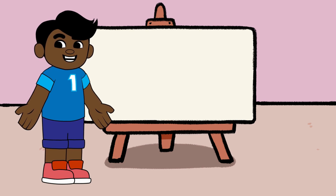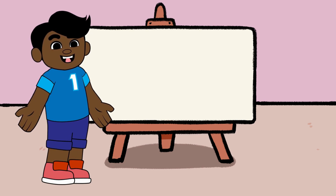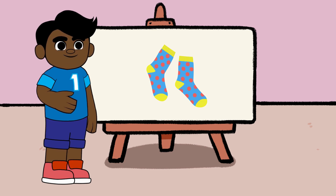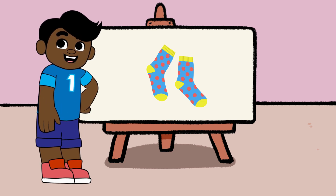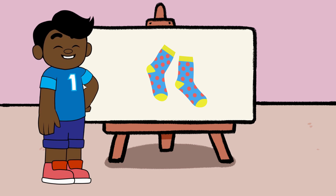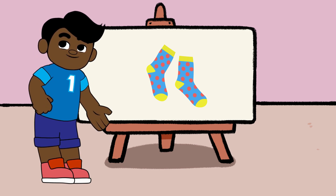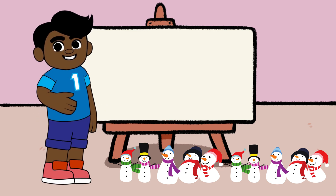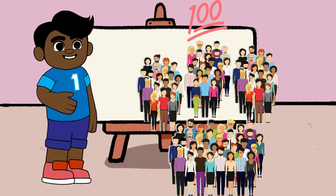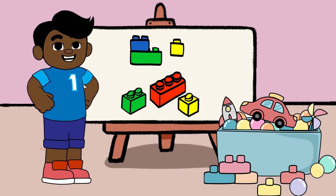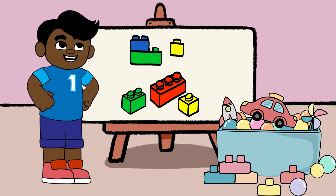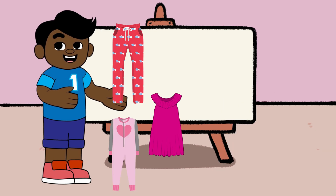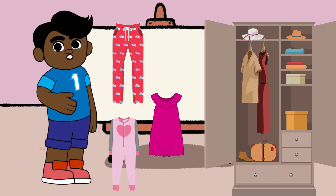Now that you know the basics, you can start counting all sorts of things around you. We also have special names for groups of numbers. When you see a pair of socks, it's really a group of two items, right? It's the same with numbers. For example, a group of ten is called a tens. A group of a hundred is called a hundreds. These are a way of organizing or grouping numbers. It's like having a toy box to put all your Lego blocks in, or a special clothes drawer for your favorite shirts.